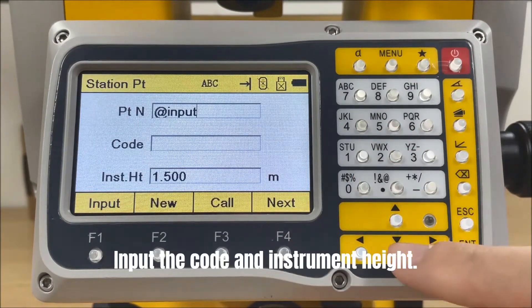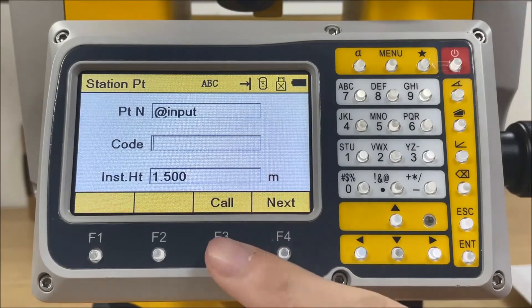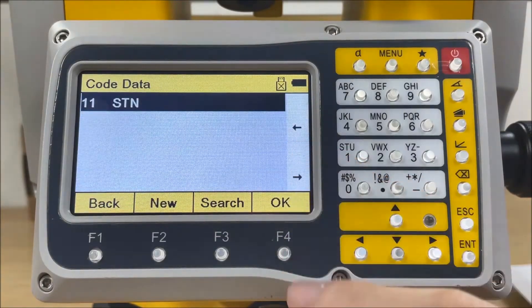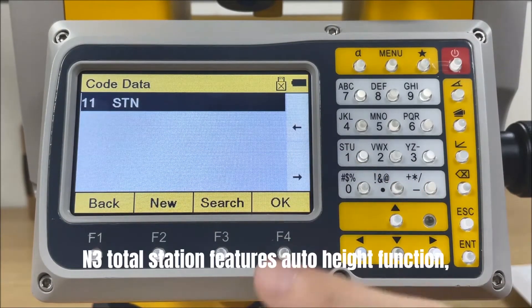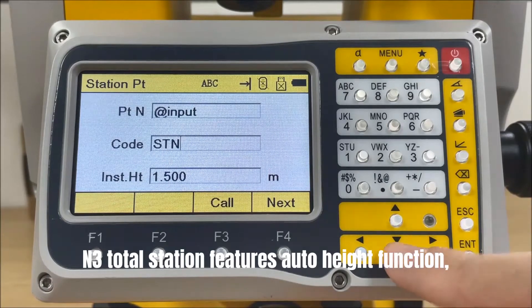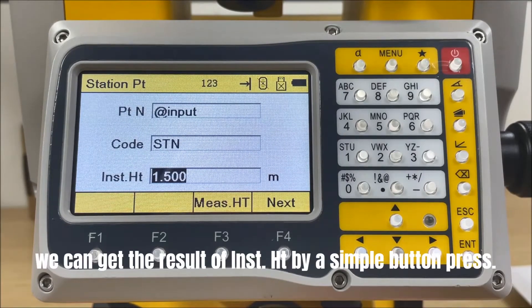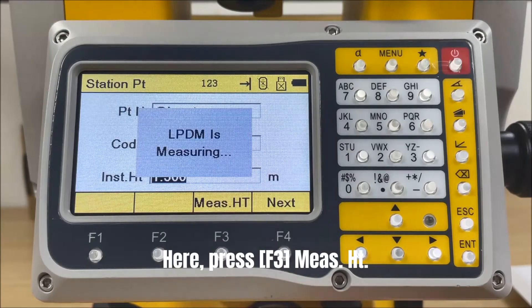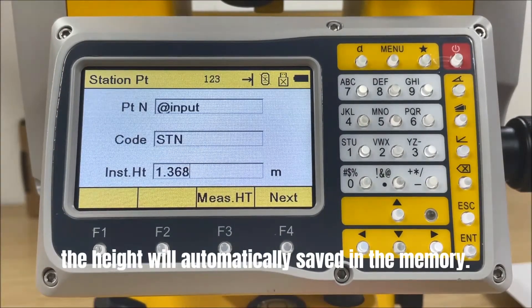Input the code and instrument height. N3 Total Station features Auto Height function, which means we can get the result of instrument height by a simple button press. Here, press F3, the height will automatically be saved in memory.